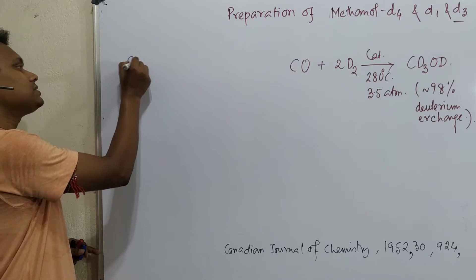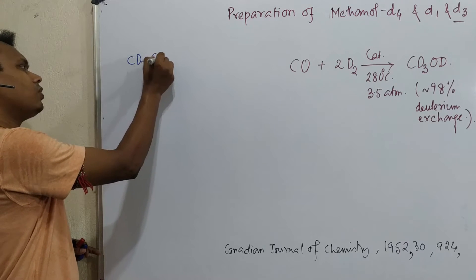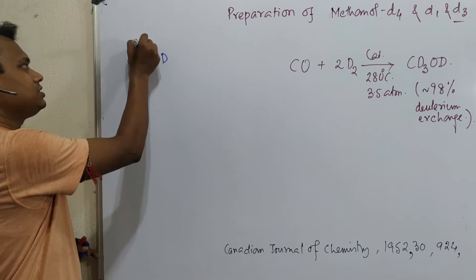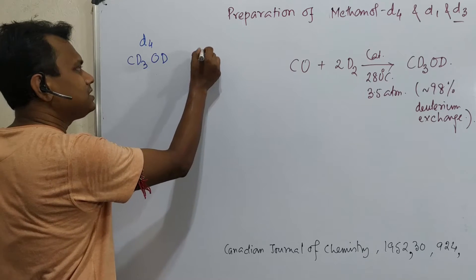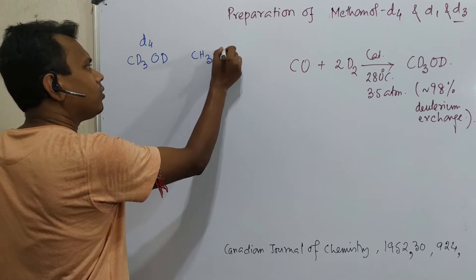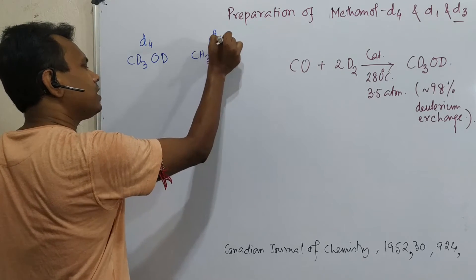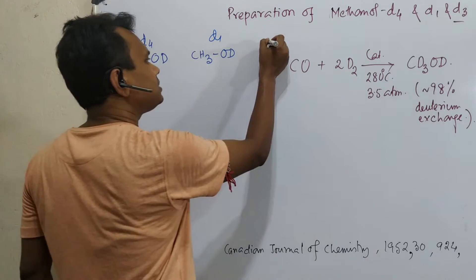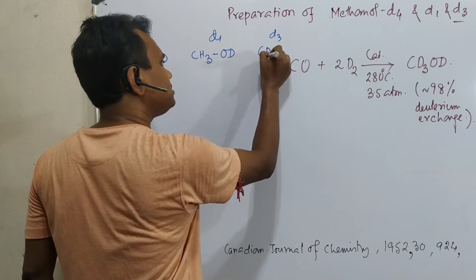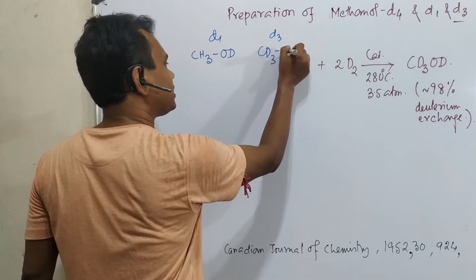So what does it mean by methanol D4? Methanol D4 means CD3OD, this is D4. What is D1? CH3OD, this is D1. And what is D3? D3 is CD3OH.